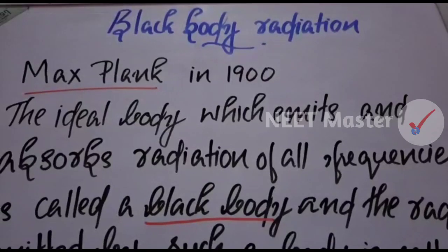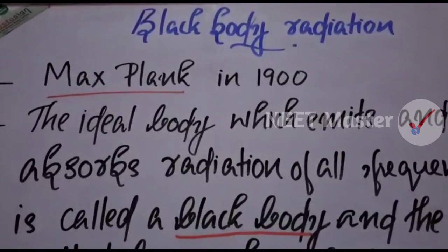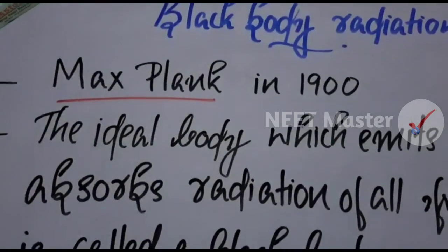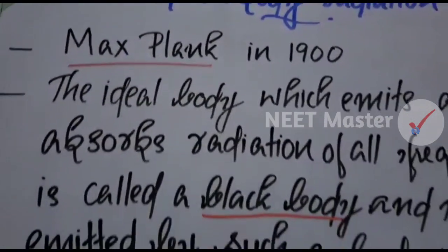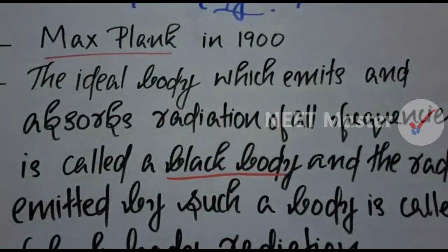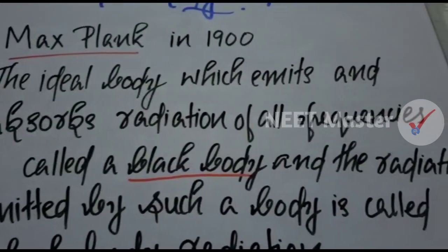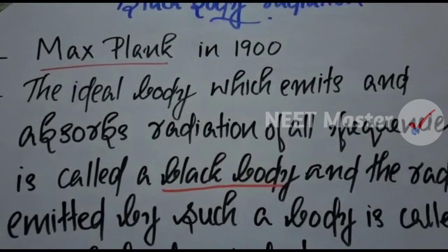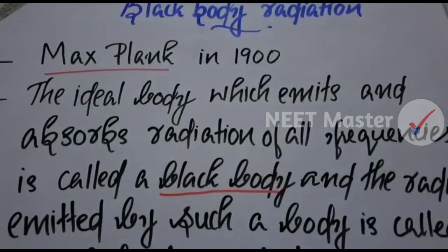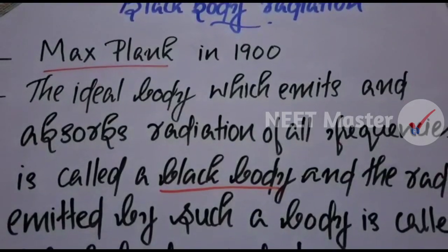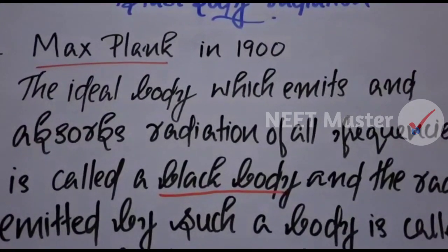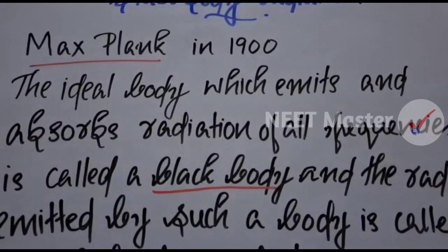Black body radiation. This phenomenon was explained in 1900 by scientist Max Planck. What is a black body? The ideal body which emits and absorbs radiation of all frequencies is called a black body. Black body is an ideal body.